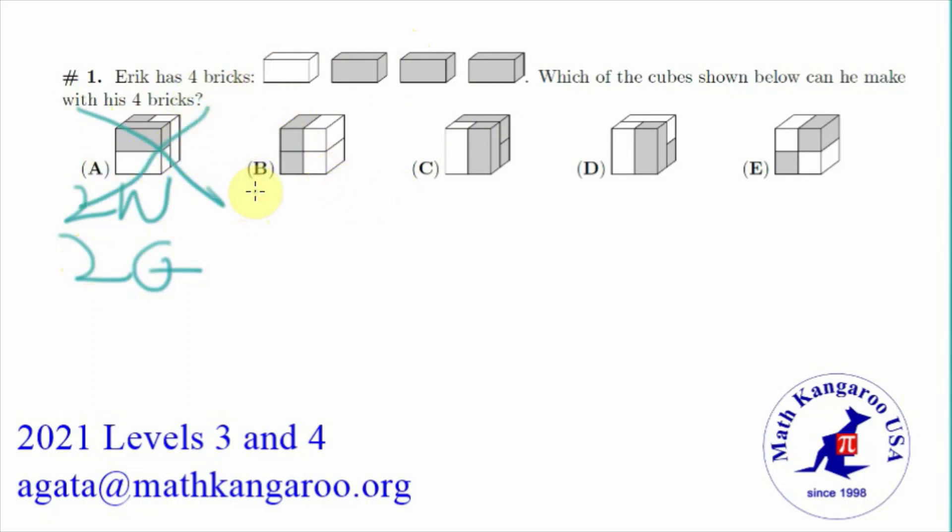Next is B. It also has 2 white and 2 grey. And it cannot be our answer for the exact same reason.